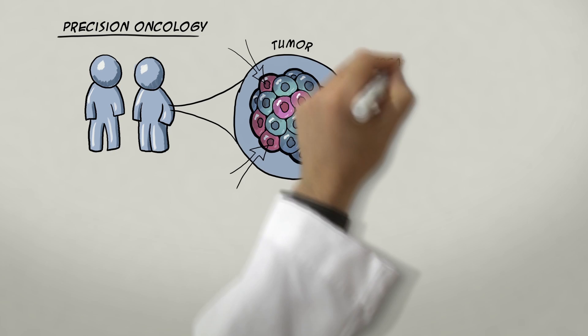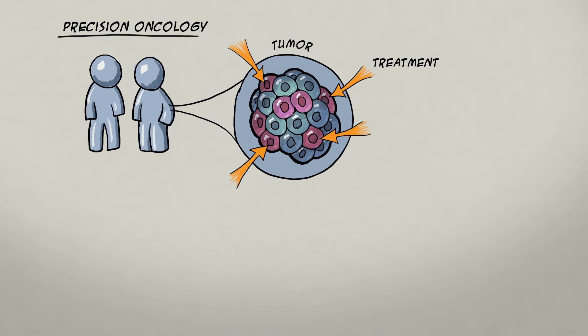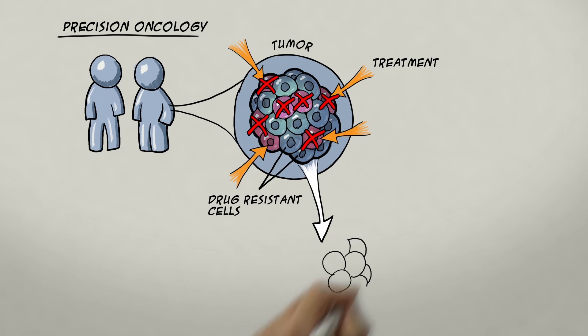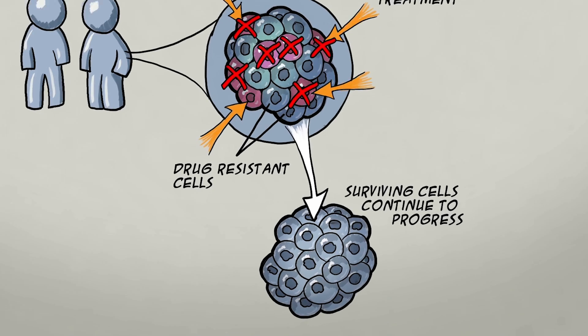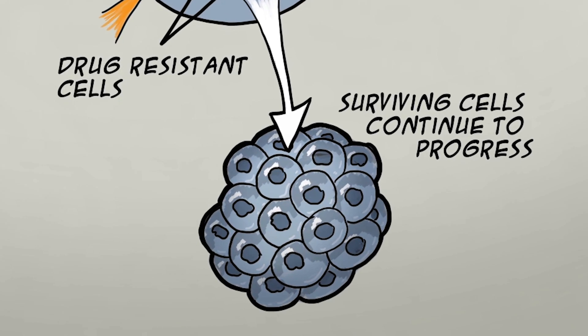The problem is, if you treat one region of the cancer, the other regions that are genetically different may in fact survive and continue to progress. How do we go in there and grab these cells to understand the genetic differences between them?